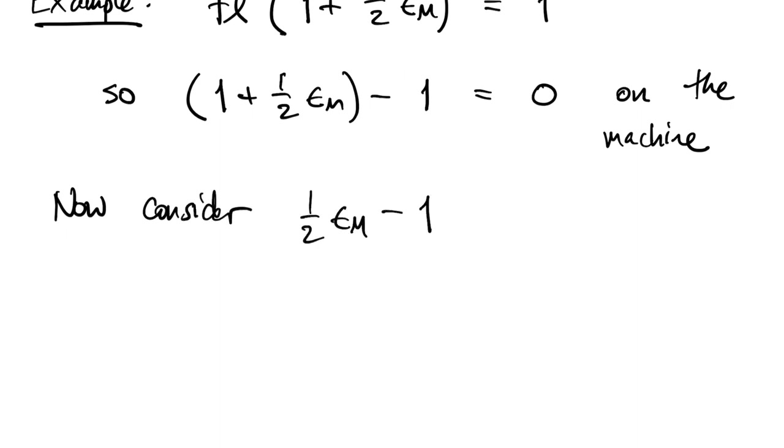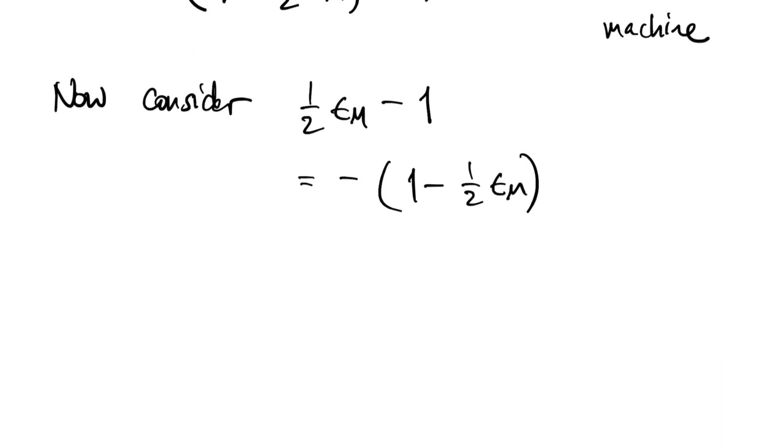Let's look at 1 half machine epsilon minus 1. So that's the negative of 1 minus 1 half machine epsilon. So in the forward direction,